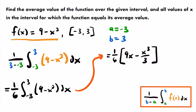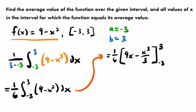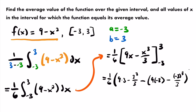We evaluate by plugging in 3 first, then subtracting the evaluation at negative 3. So we have one-sixth times [(9·3 minus 3³/3) minus (9·(negative 3) minus (negative 3)³/3)]. Remember to subtract both terms — that's why they're in parentheses. So we have 9 times negative 3, then subtracting negative 3 cubed divided by 3.